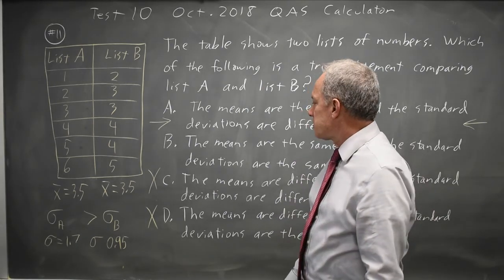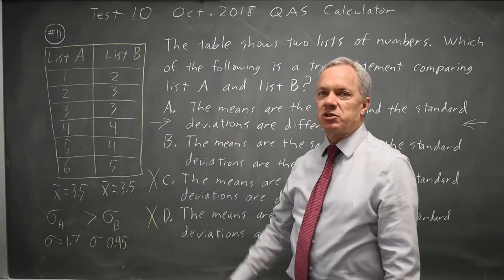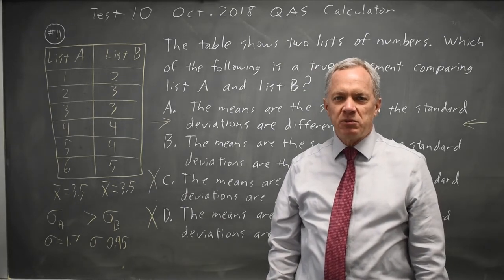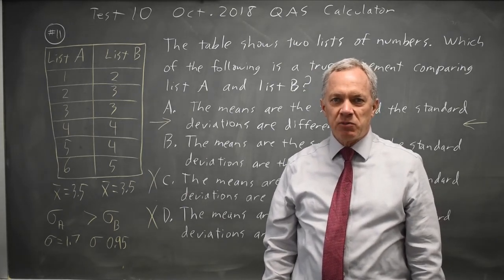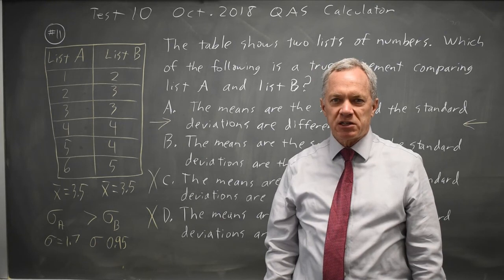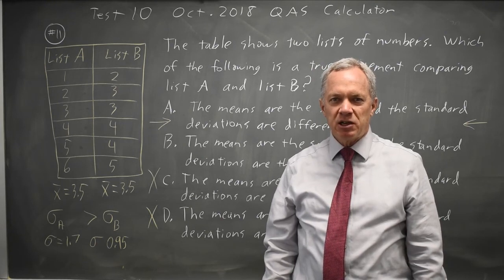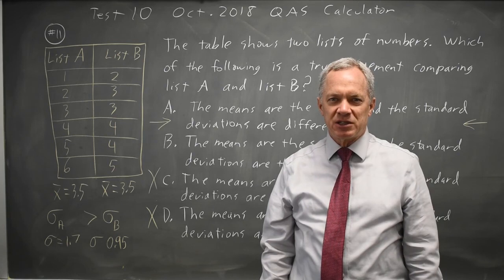The important thing for answering this question is it's different, so the answer would be choice A. Make sure you review mean, median, and standard deviation and box plots because College Board is likely to test all four of them on your SAT. And come back soon for my next video. With math, there's always more.